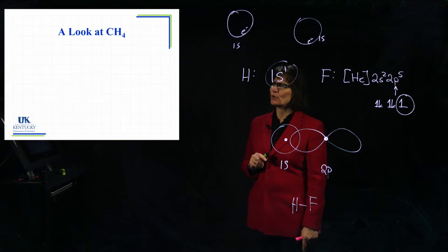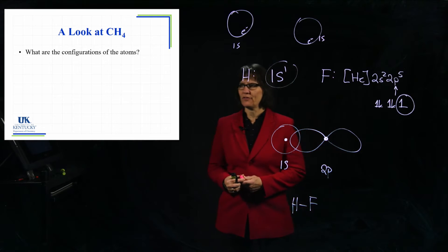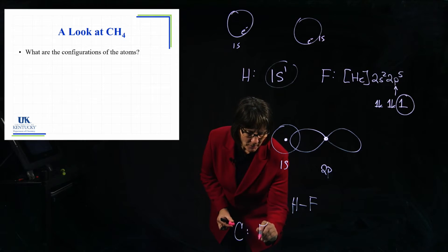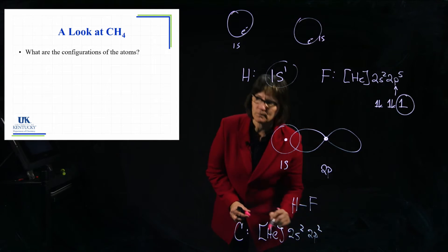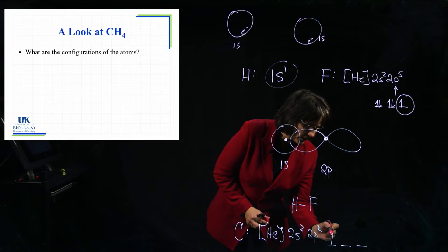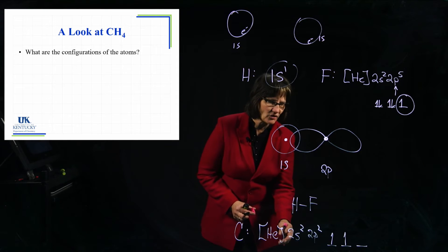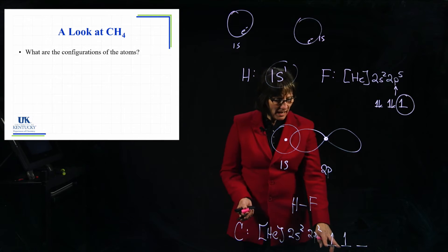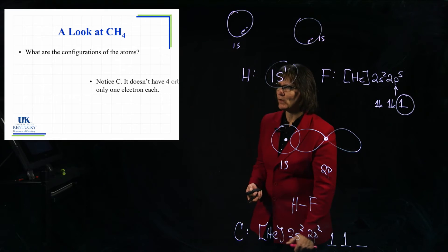Let's look at the electron configurations for CH4. Hydrogen is easy: 1s1. Carbon is [He] 2s2 2p2. What I have in my p orbitals is two electrons — the other orbitals are filled up. Since only valence shells can get involved in bonding, it looks like carbon could only form two bonds. If it could only form two bonds, then CH4 could never exist. So something else is happening here.